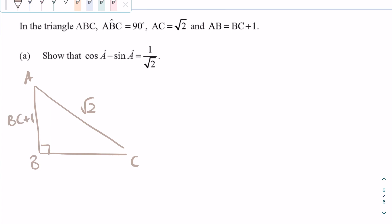AC is square root of 2, AB is BC plus 1, and BC is BC. We need to prove this identity.